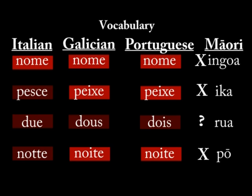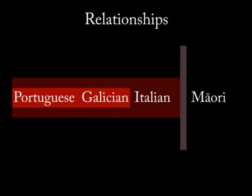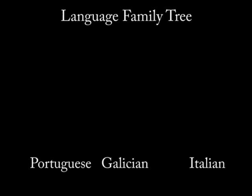That is, Maori may be related to other languages, but it is not related to Italian, Galician, and Portuguese — at least as far as we can tell from this set of words. But that's not enough. At this point we just have a flat understanding of the relationships. We should extend this back the same way we'd do with a family tree. What we'll do is group Galician and Portuguese together in one branch of the tree, and then Italian in a separate branch of the tree.